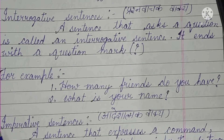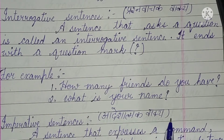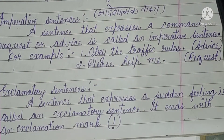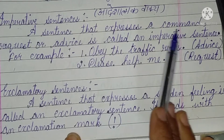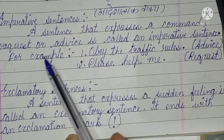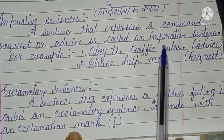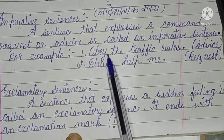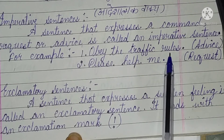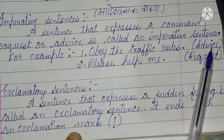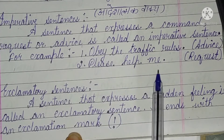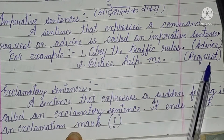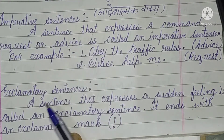The third type is imperative sentence. A sentence that expresses a command, request, or advice is called an imperative sentence. Jis vakya mein kisi ko aadesh diya ja raha ho, prarthna ki ja rahi ho, ya salah di ja rahi ho — use imperative sentence kehte hain. For example: 'Obey the traffic rules' — this is advice. 'Please help me' — this is a request. Both are imperative sentences.